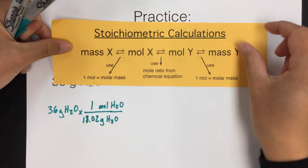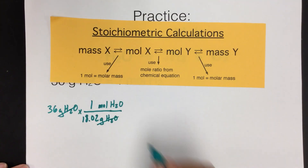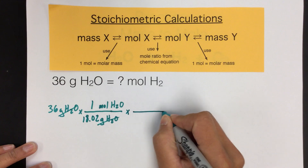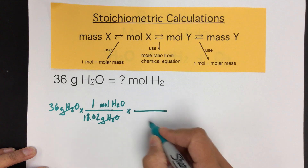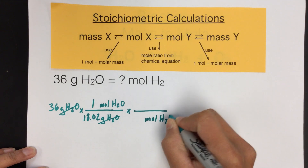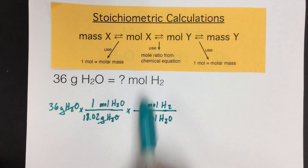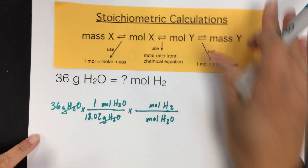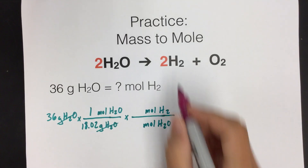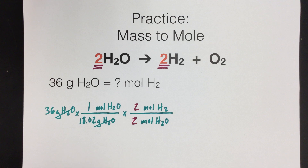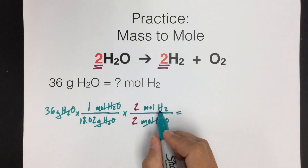After that conversion we are at moles of H2O. Now we need to convert to moles of H2, so we do a moles-of-X to moles-of-Y step. We need another conversion factor: moles of H2O goes in the bottom, moles of H2 on top. These numbers come from the balanced chemical equation. There are two moles of H2 and two moles of H2O, so the mole ratio is 2 to 2. Our moles of H2O cancel, leaving us with moles of H2.